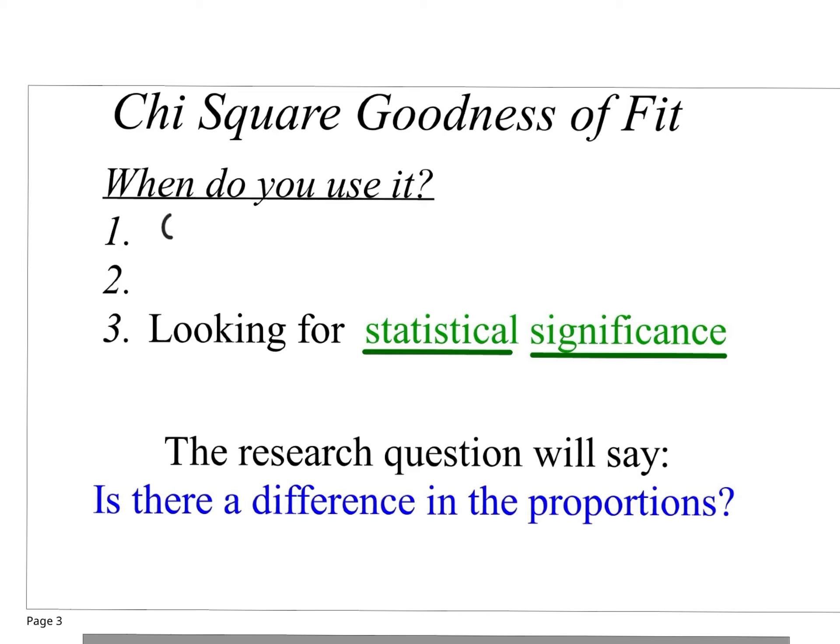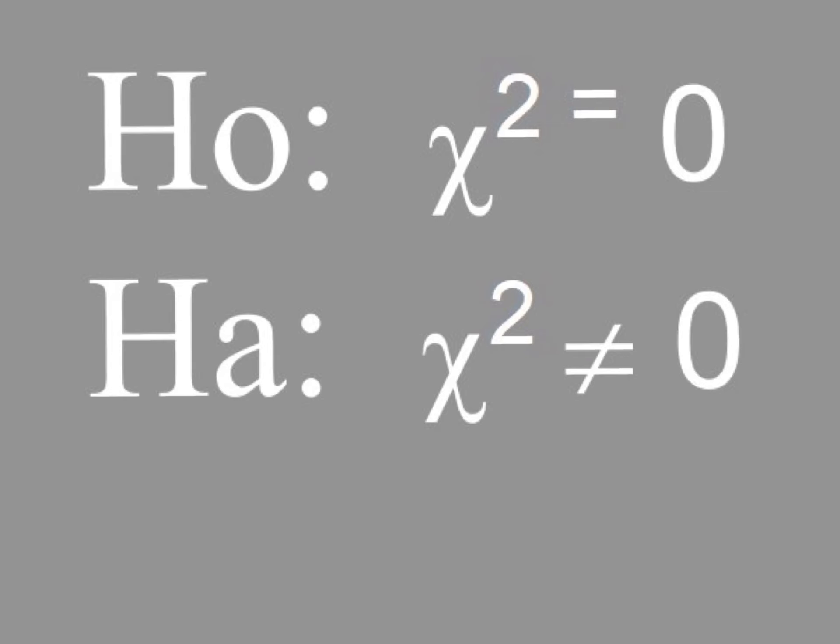So we will have qualitative data that will be counted up and organized into categories, so we will have one column of observed data from our sample. And as always, we're looking for statistical significance. And as a hint, the research question will say, is there a difference in the proportions?